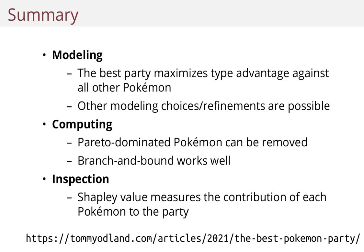It's also used in machine learning to tell you which features contribute to a prediction — that's a popular use case of the Shapley value in our times. But it's really from game theory, and it can be used to solve game-theoretic problems where you have coalitions or problems like this.